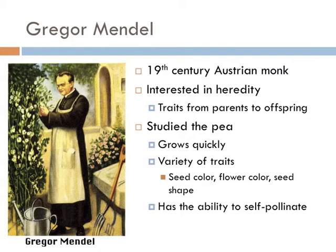The story of the gene begins with Gregor Mendel. He was a 19th century monk that had an interest in heredity, or how physical traits are transferred from parents to offspring. Mendel knew that the common garden pea had very unique traits among a population, such as seed color, flower color, and seed shape. So he began cultivating the pea to determine if he could figure out how those physical traits followed from generation to generation.